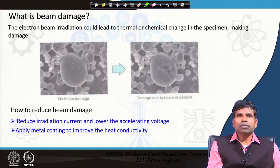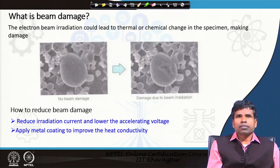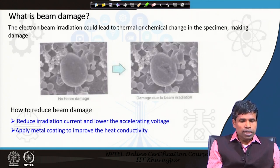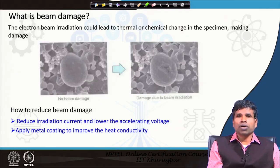Polymer and biological samples are most commonly examined with acceleration voltages in the range of 1 to 3 kilovolts. On the other hand, oxide and metal-type samples can be done at more than 5 kilovolts. Another way to reduce beam damage is to apply a metal coating to improve heat conductivity — a thicker metal coating will also help protect biological or polymeric samples from damage to a large extent.